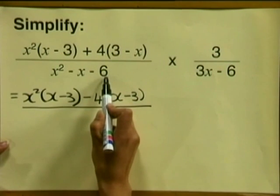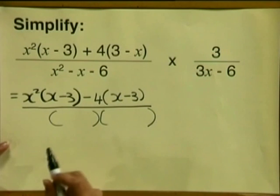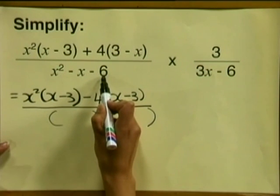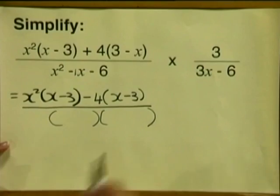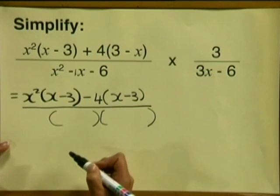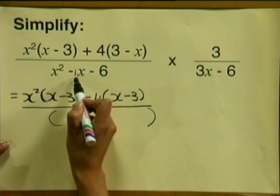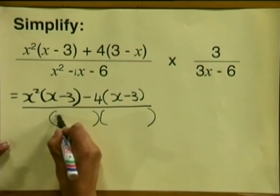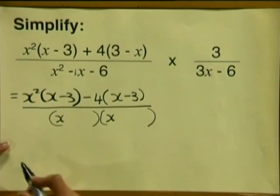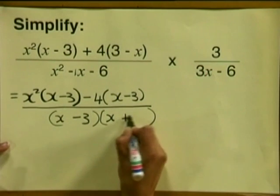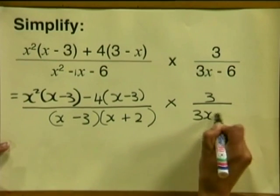And that is all divided by our denominator. Now we should recognize our denominator — it's a trinomial. Straight away we write down our two brackets. We say what two numbers multiplied together give us minus 6 and add up to give us minus 1. Minus 3 multiplied by 2 gives us minus 6, and minus 3 plus 2 gives us minus 1 — so that's our correct option. So we write x minus 3 and x plus 2. Then we multiply by 3 and divide by 3x minus 6.